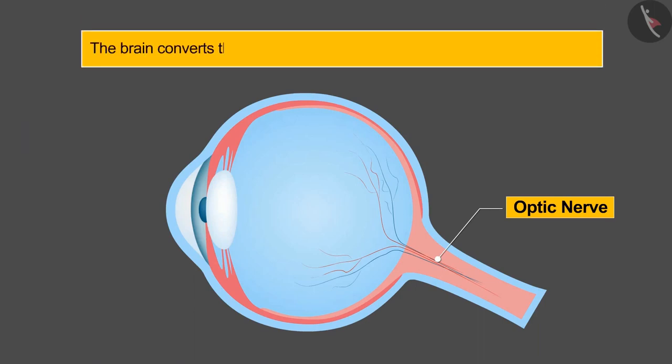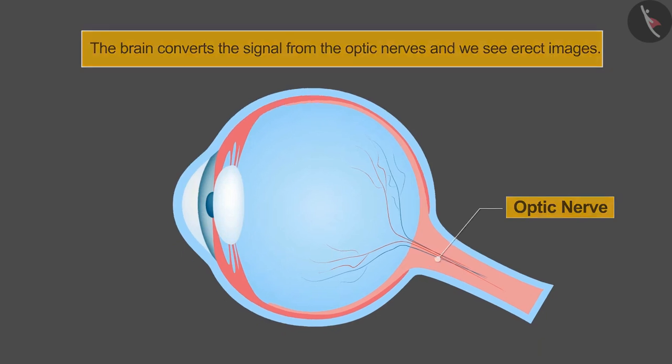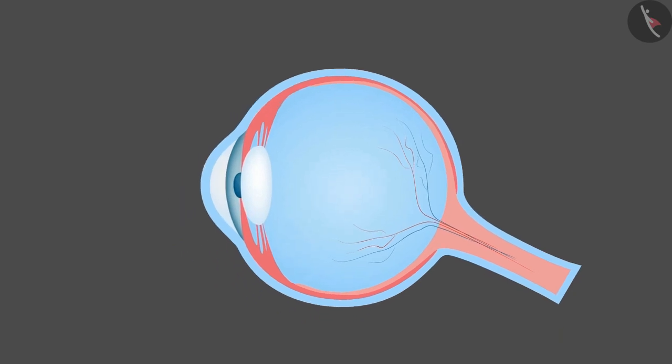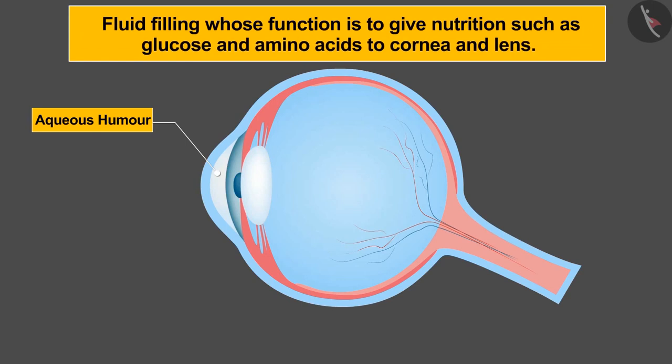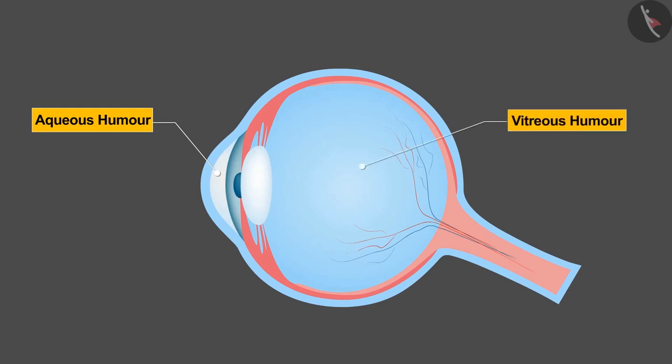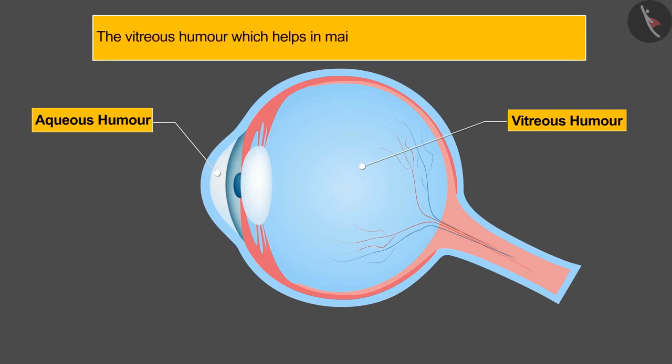The brain converts the signal from the optic nerves and we see erect images. Apart from these organs, there are two types of humor filling in our eyes. First one is aqueous humor, which is a fluid filling whose function is to give nutrition such as glucose and amino acids to cornea and lens. The second tissue filling is the vitreous humor, which helps in maintaining the round shape of the eyes.